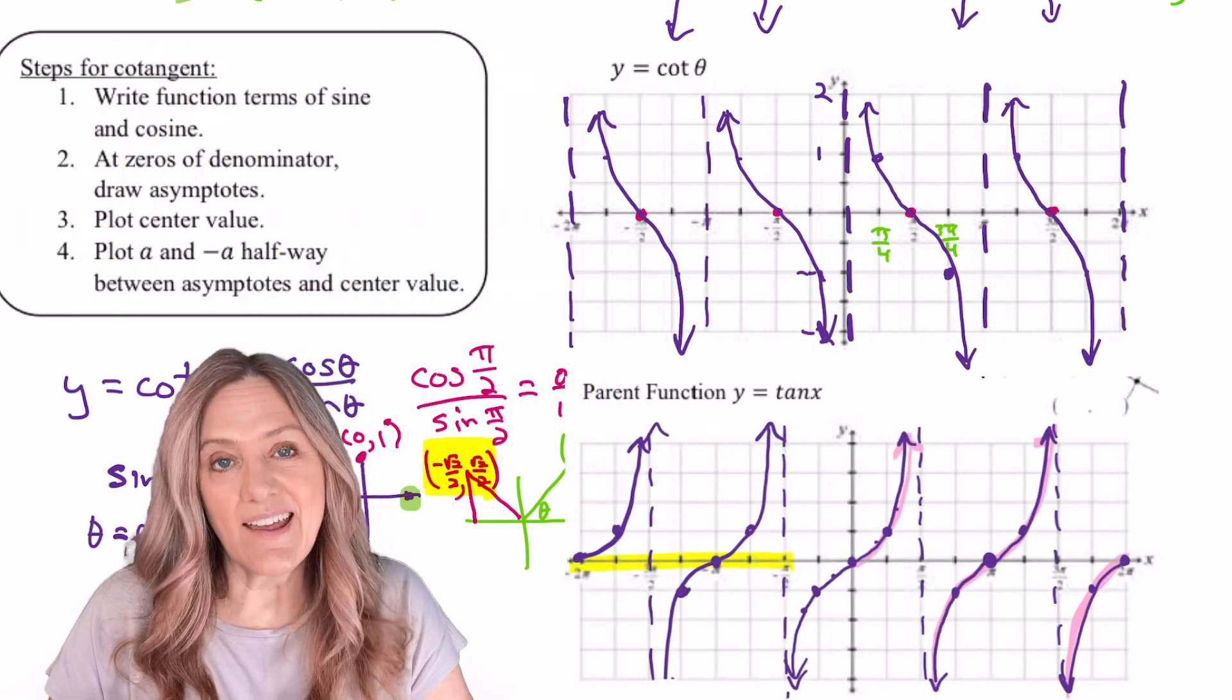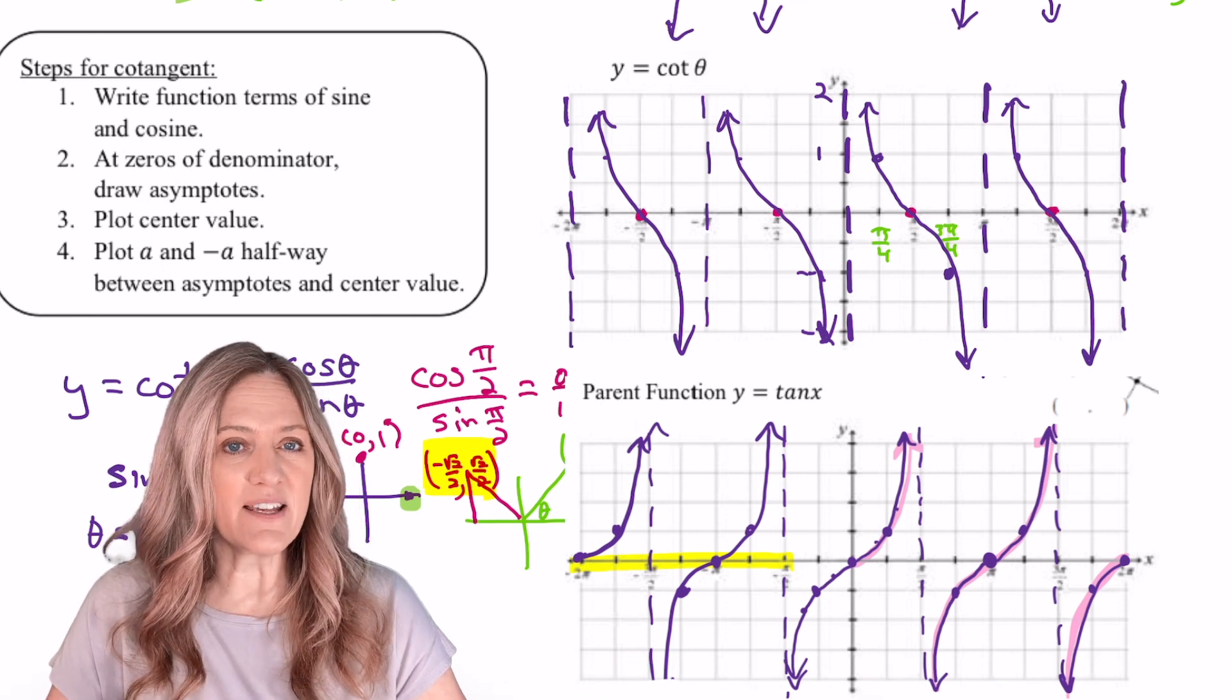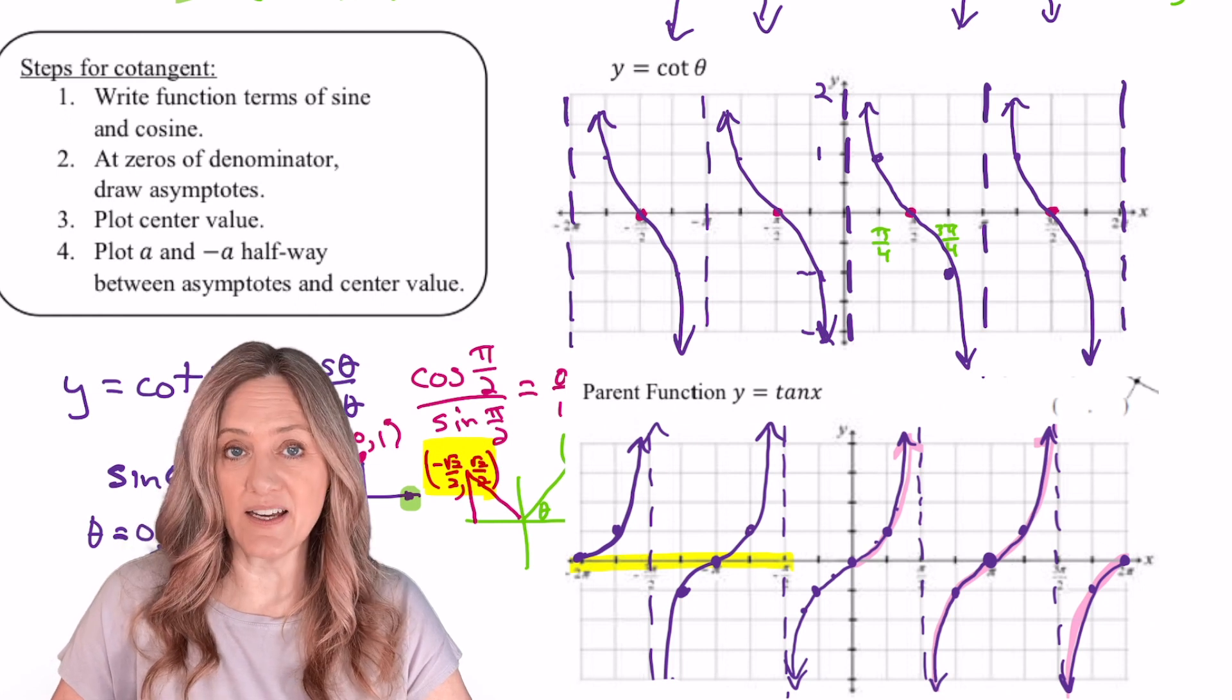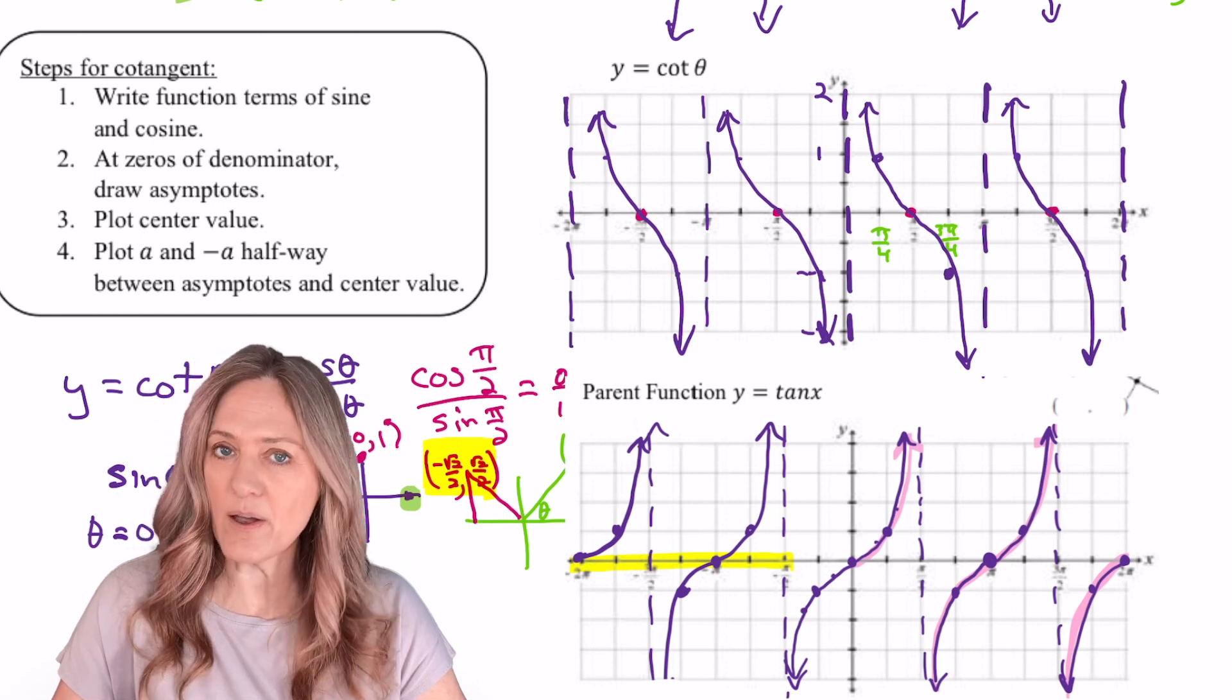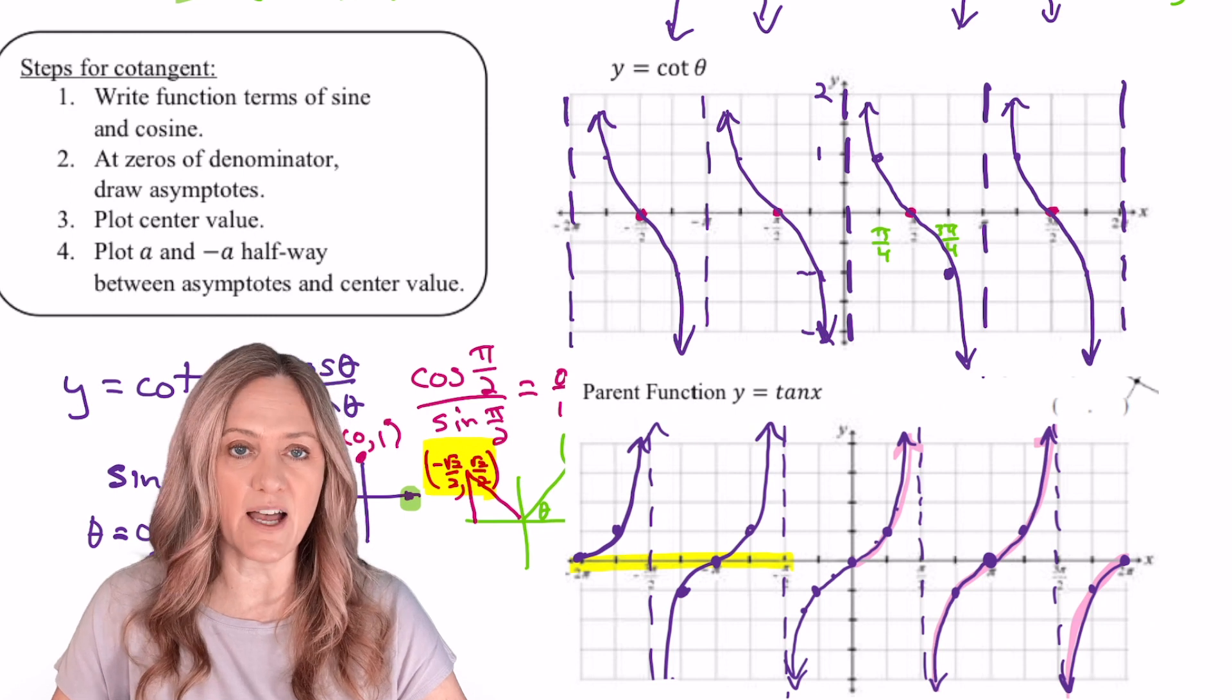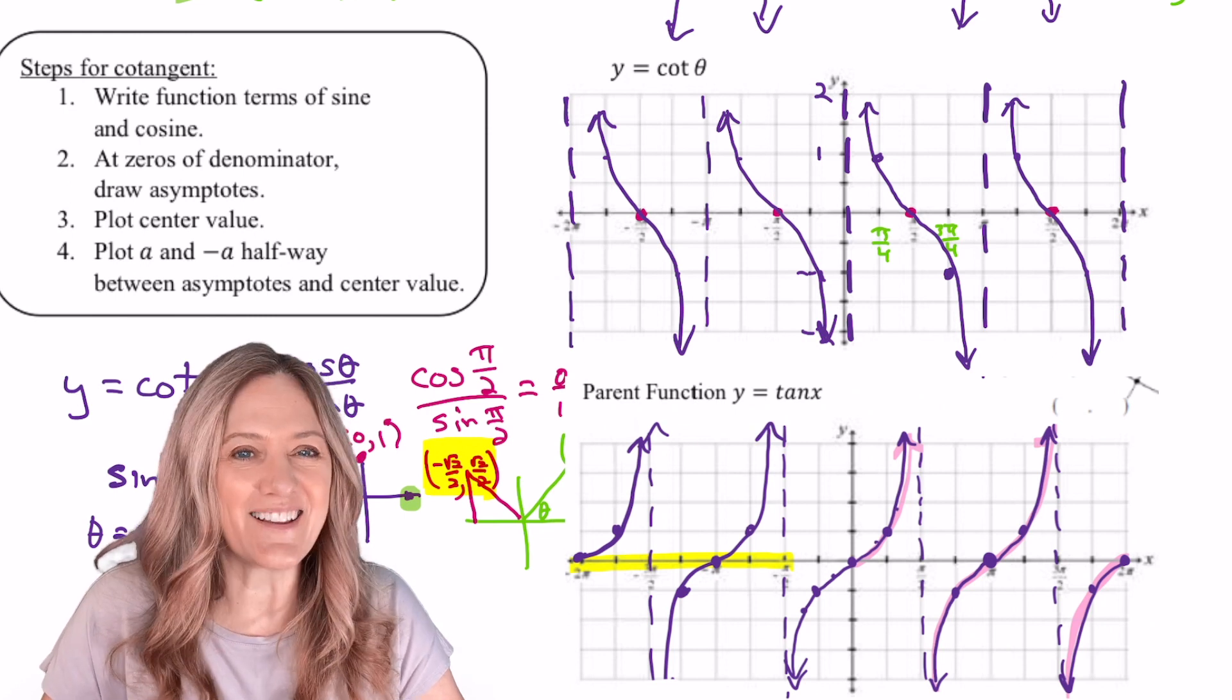Let's take a look at cotangent and tangent. We see that the asymptotes are located in different places. Because remember, cotangent is cosine divided by sine. So the zeros of sine cause the vertical asymptotes. Whereas tangent is sine divided by cosine. Therefore, the zeros of cosine cause the vertical asymptotes. And then the overall shape changes just that little bit, right?